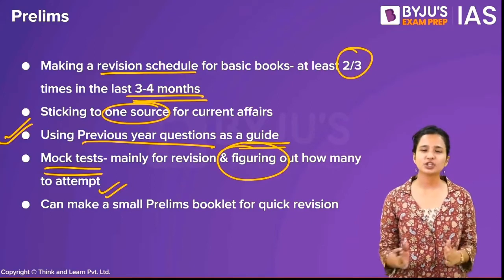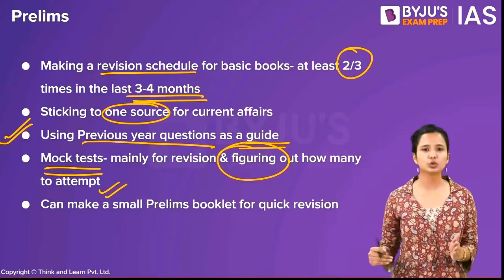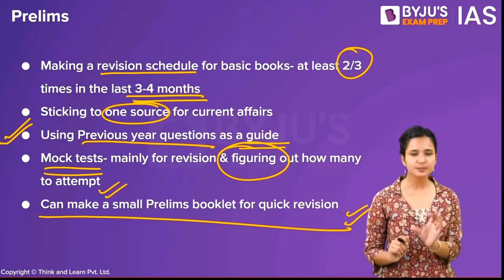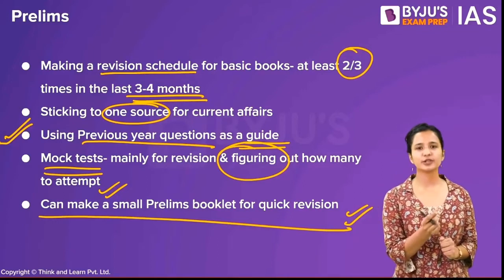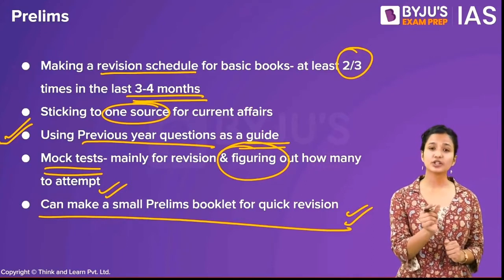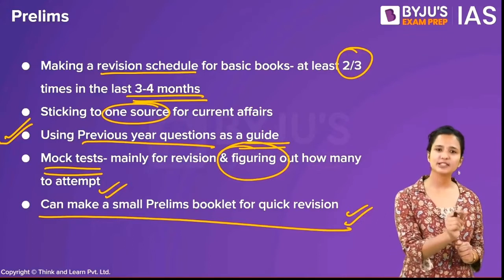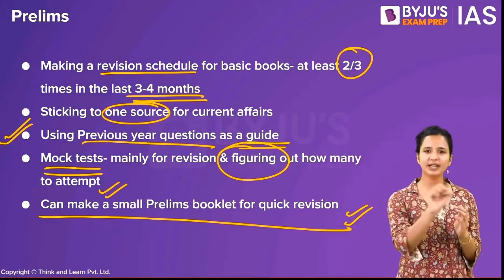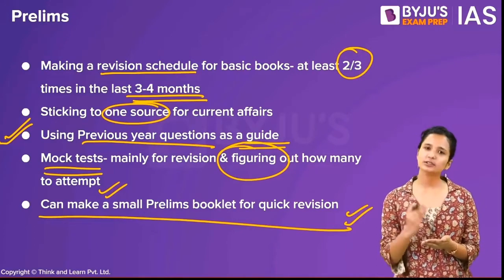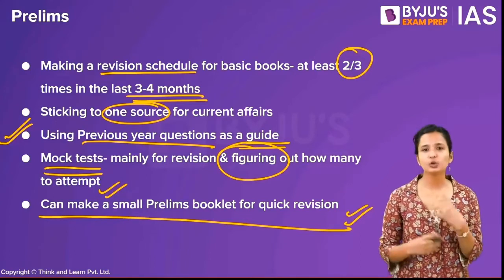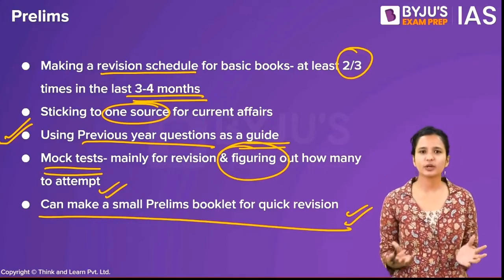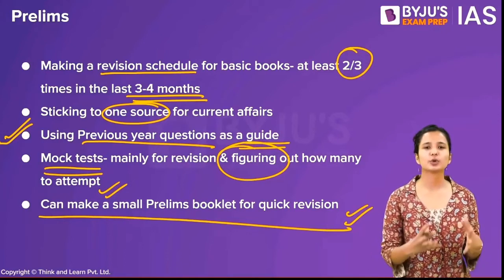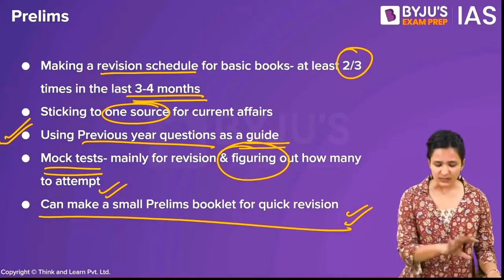One week before the final examination, try to attempt the last three to four years' question papers within those two hours and see how many you get right. Another thing I did towards the end was making a small prelims booklet — just one booklet for very quick revisions. For questions I repeatedly got wrong or things I couldn't find in any book, I wrote them down in one line per subject — two pages for polity, geography, map-based questions. Towards the end I would flip through that tiny booklet. Whatever strategy works for you, make sure you are self-analyzing at regular intervals.